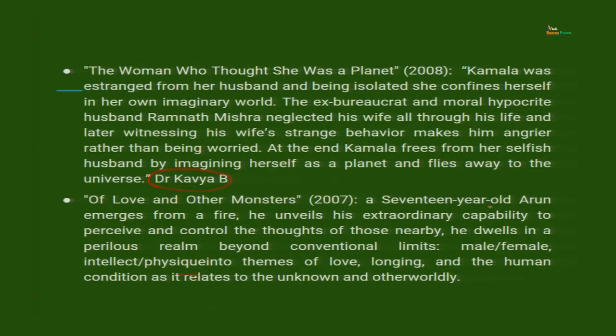Of Love and Other Monsters — a 17-year-old Arun emerges from a fire and unveils his extraordinary capability to perceive and control the thoughts of those nearby. He dwells in a perilous realm beyond conventional limits — male-female, intellect-physic — into themes of love, longing and the human condition as it relates to the unknown and other-worldly. What happens is that the boy forgets everything after he emerges from the fire, but emerges with a special ability: the ability to read minds and to manipulate memories — very dangerous. After that, he goes and lives with a particular person and starts applying his newly found abilities to make differences in his surroundings, but the consequences of such decisions are what the story is about.